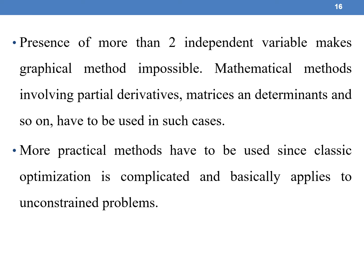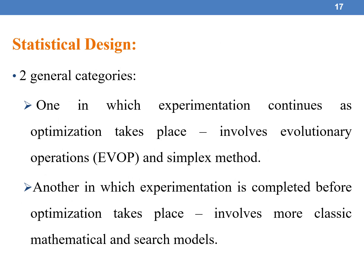The presence of more than two independent variables makes graphical methods impossible, and mathematical methods involving partial derivatives, matrices, and so on have to be used. More practical methods must be used since classical optimization is complicated and basically applies to unconstrained problems. Coming to statistical design — there are two general categories: one in which experimentation continues as optimization takes place, involving evolutionary operations and the simplex method (EVOP), and another in which experimentation is completed before optimization takes place, involving more classical mathematical and search models.